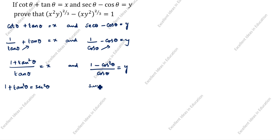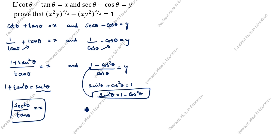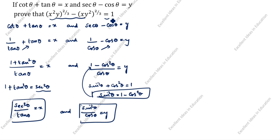How do we write 1 plus tan squared theta? The identity is: 1 plus tan squared theta equals secant squared theta. Also, sin squared theta plus cos squared theta equals 1, so sin squared theta equals 1 minus cos squared theta. Substituting: 1 minus cos squared theta is sin squared theta. So x equals secant squared theta divided by tan theta, and y equals sin squared theta divided by cos theta.